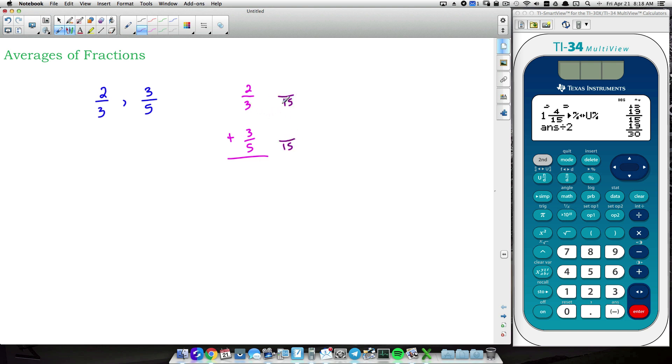15 is going to be your least common multiple, which is going to be your least common denominator. So 3 times 5 is 15. 2 times 5 is 10. That's an equivalent fraction to this here. 5 times 3 is 15. So 3 times 3 gives us 9. So let's add those two fractions together now that we have common denominators. So therefore, the sum of our fractions is going to be 19 over 15.